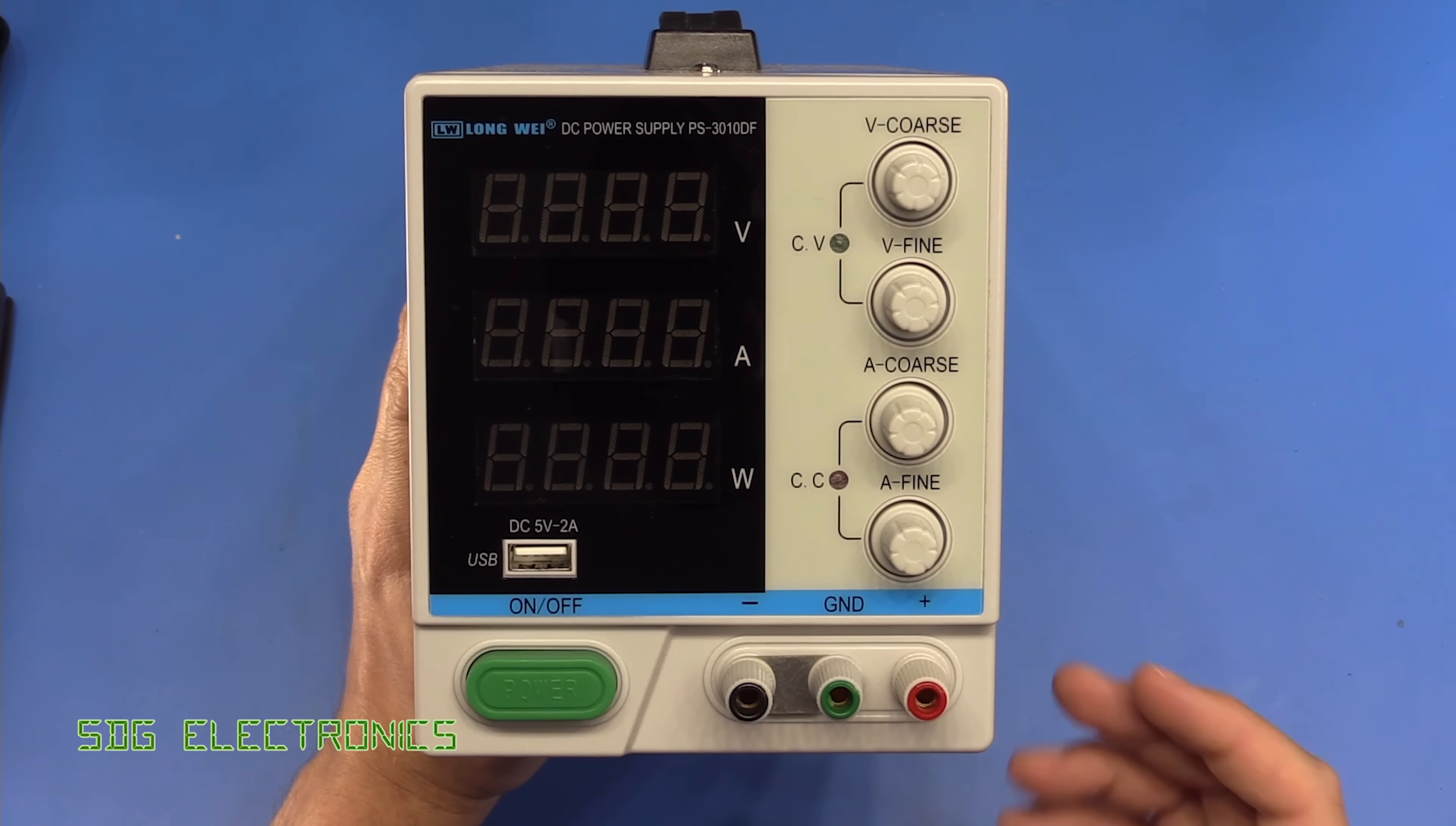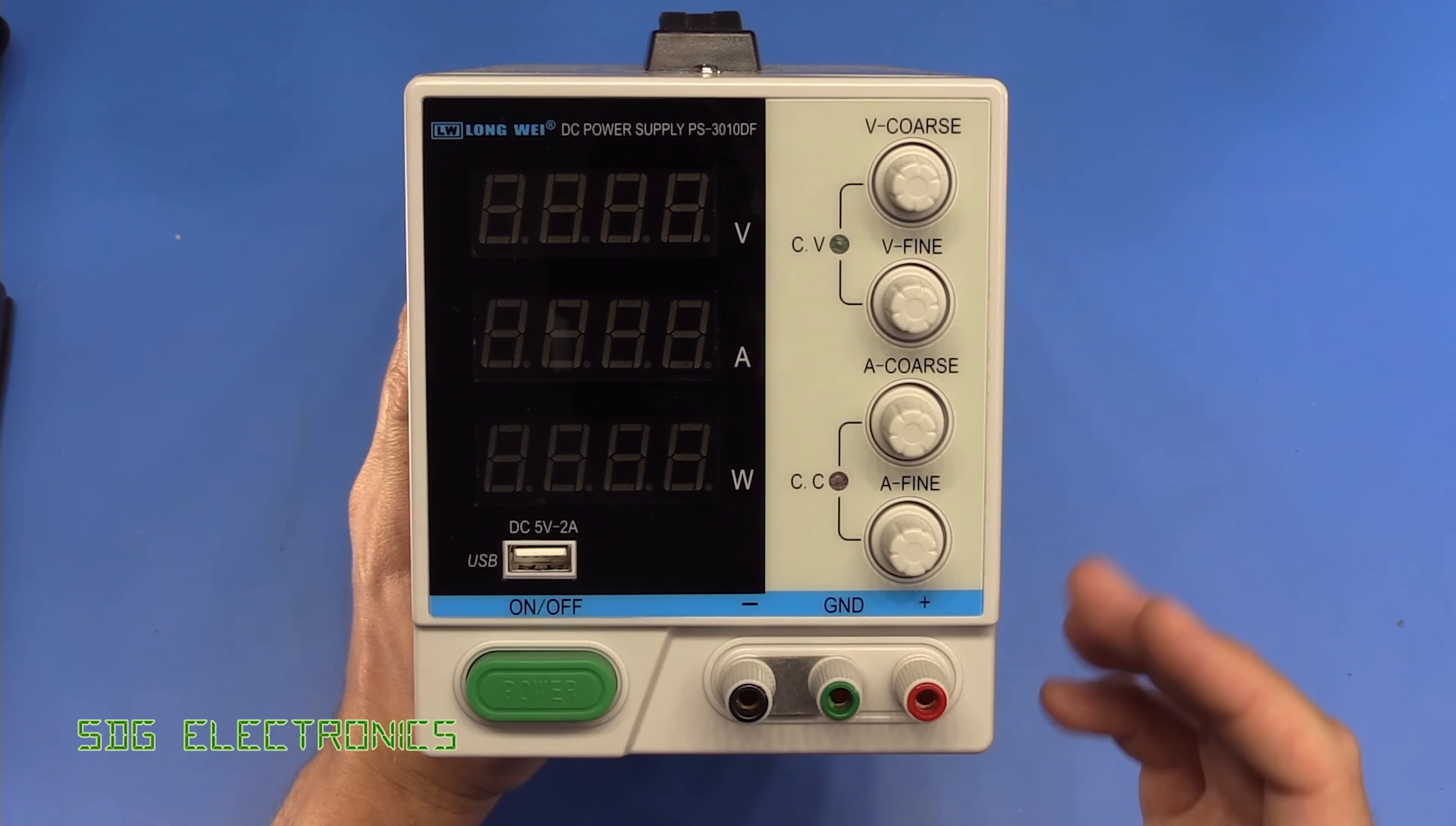There is a 5 amp model as well, which is a bit lower cost, but 30 volts at 10 amps would probably power most things that you're ever going to want to use on the bench.